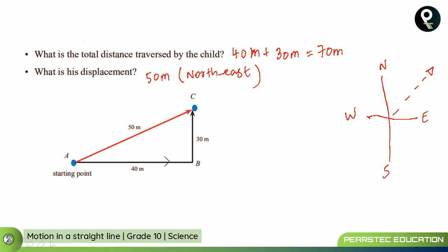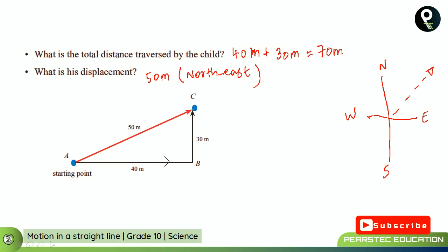So we now understand the clear definition and difference between displacement and distance. Displacement always has both direction and magnitude, whereas distance has only magnitude and no direction. Let's meet in another session to learn more about motion in a straight line. Great in Science — bye-bye, take care!